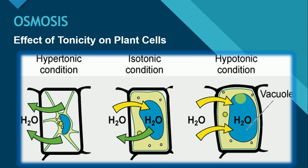Hypotonic solution mein jab cell ko place karenge, water will move inside the cell, then the water will get entered inside the vacuole. Vacuole paani ko absorb karke swell ho jae ga. But animal cells ki tarha plant cell rupture nahi ho ga, because plant cell mein ek thick strong cell wall present hooti hai, joh isko rupture honne se bachaati hai.